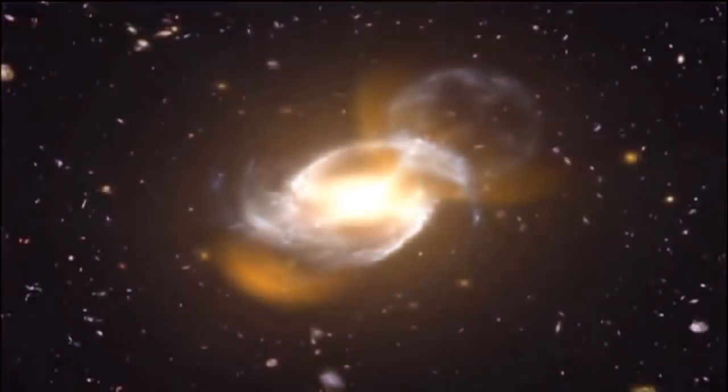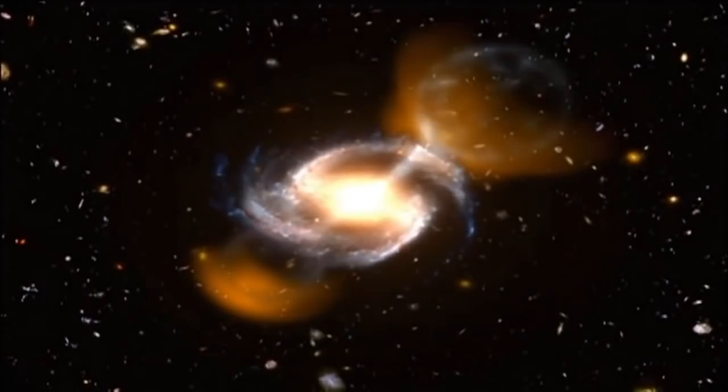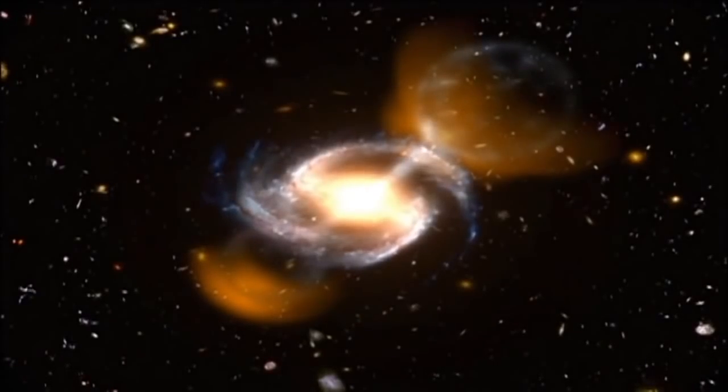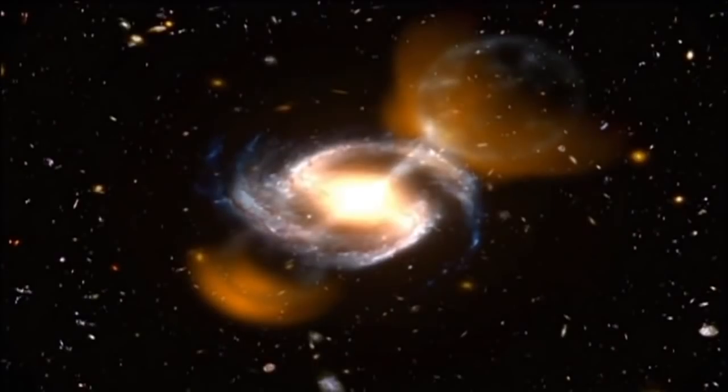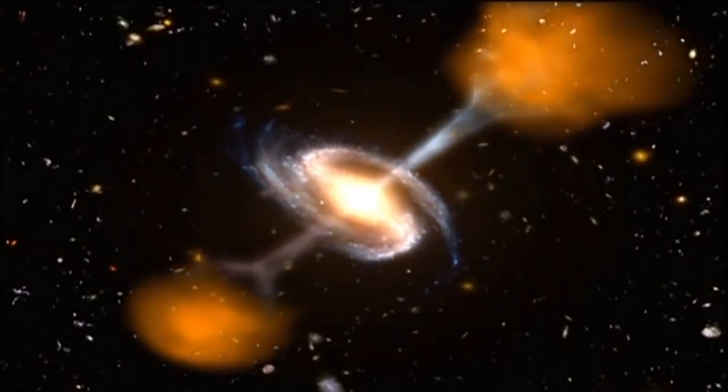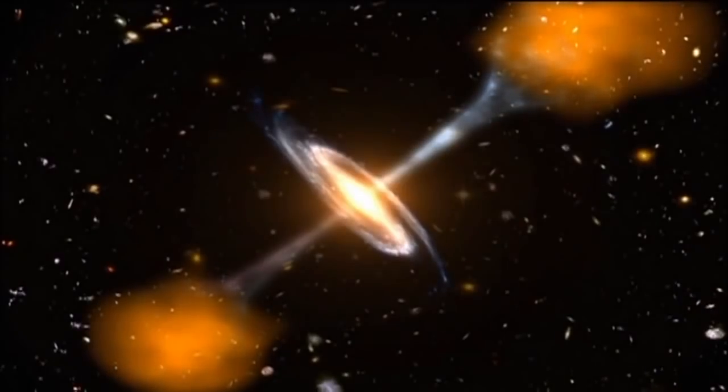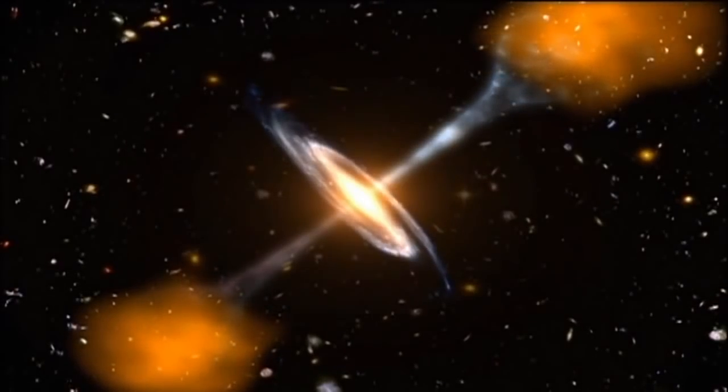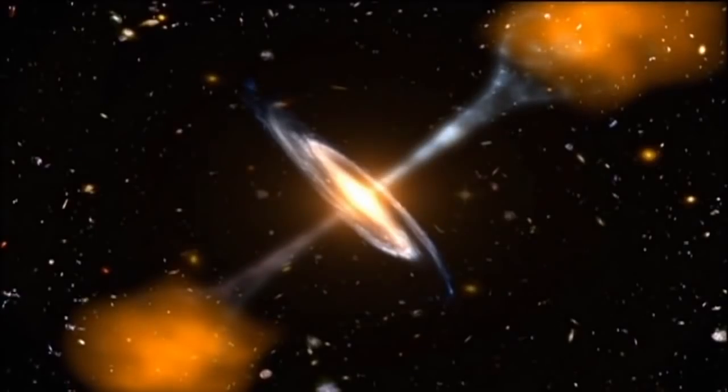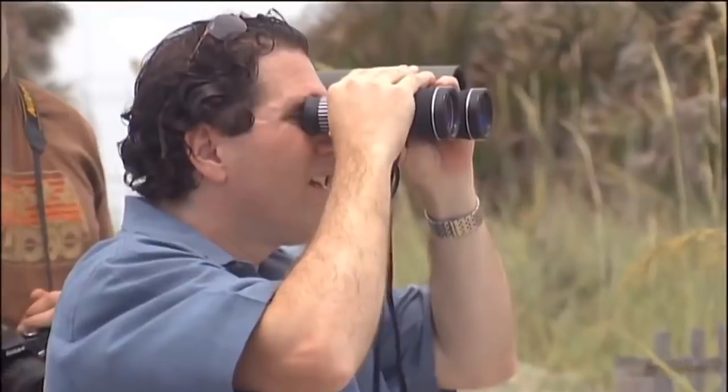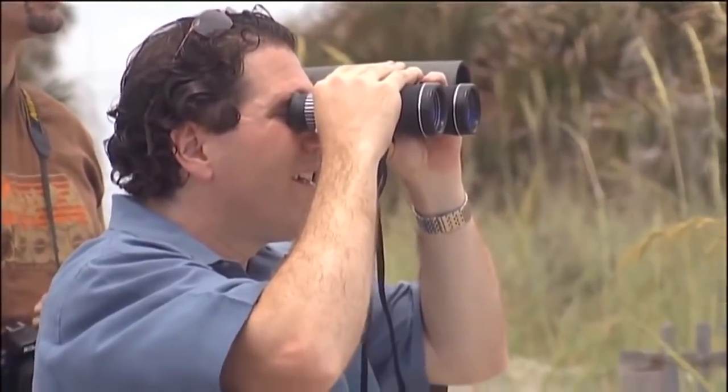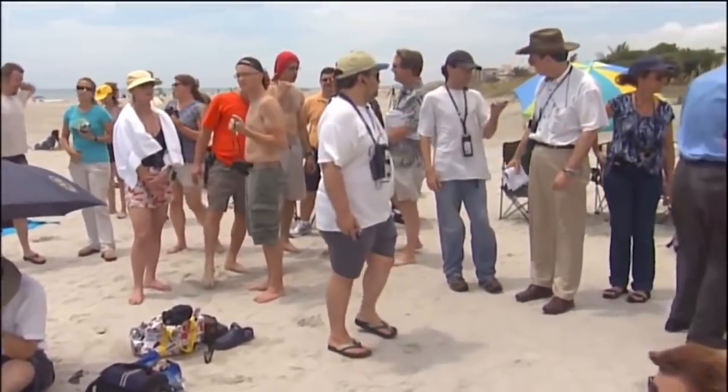Astronomers have long puzzled over a class of ultra-bright beacons of light from the distant universe called quasars. In time, they link them to the outpouring of energy from the centers of galaxies and to growing black holes. But how can something that emits no light shine so brightly? The chance to solve this mystery has drawn a crowd near NASA's Kennedy Space Center in Florida.